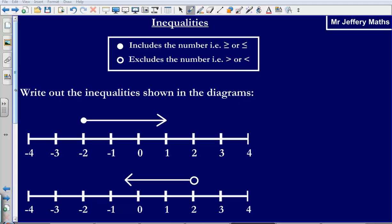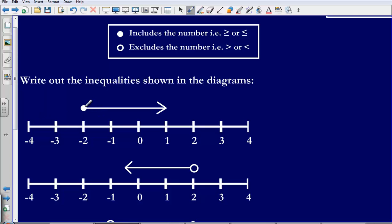So let's start having a go at these, write out the inequalities shown in the diagrams. So here we are showing that our number could be equal to negative 2 or greater than it. So what we could say is that x is equal to or greater than negative 2. So what we are saying here is that our number, the number that we are looking at could be negative 2 or bigger than negative 2. So x could be equal to negative 2 or bigger than negative 2.